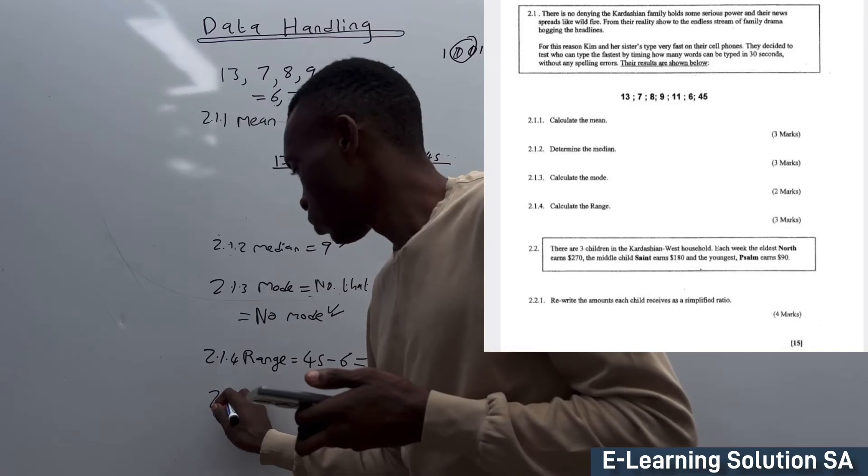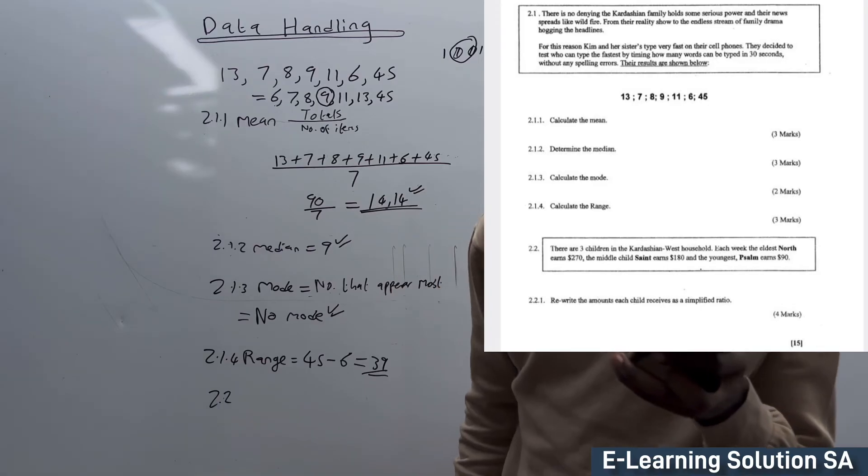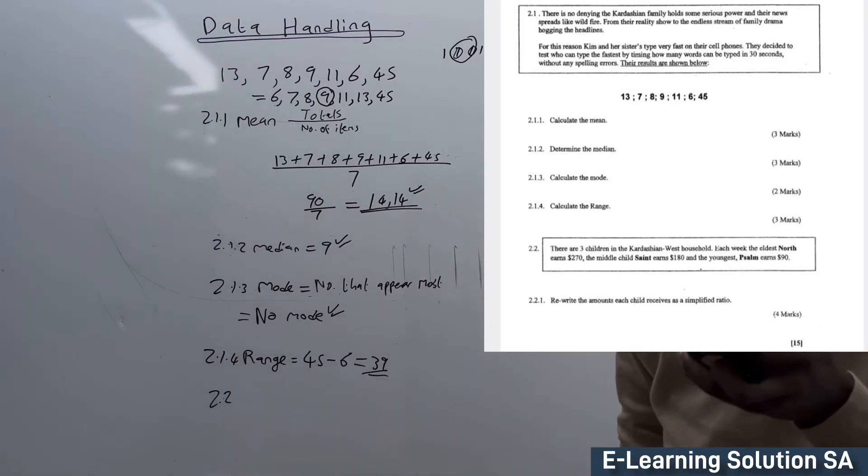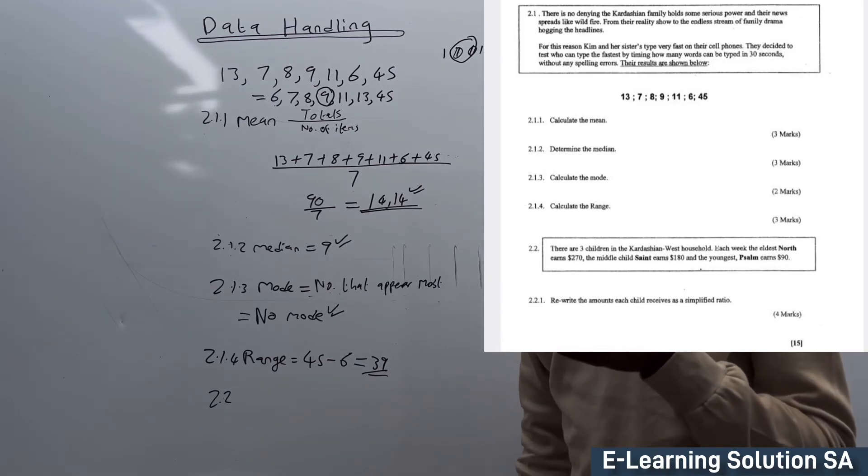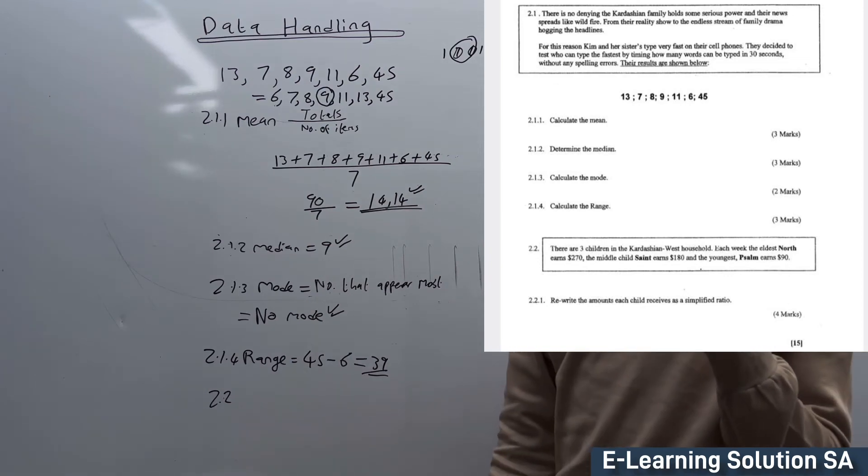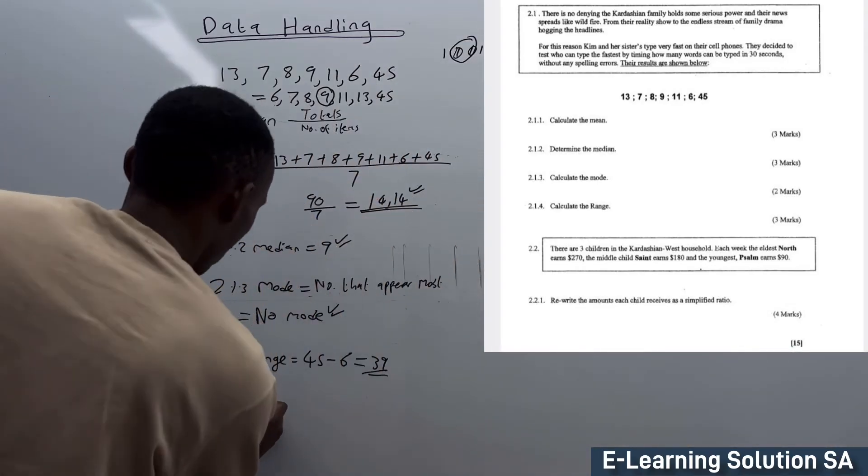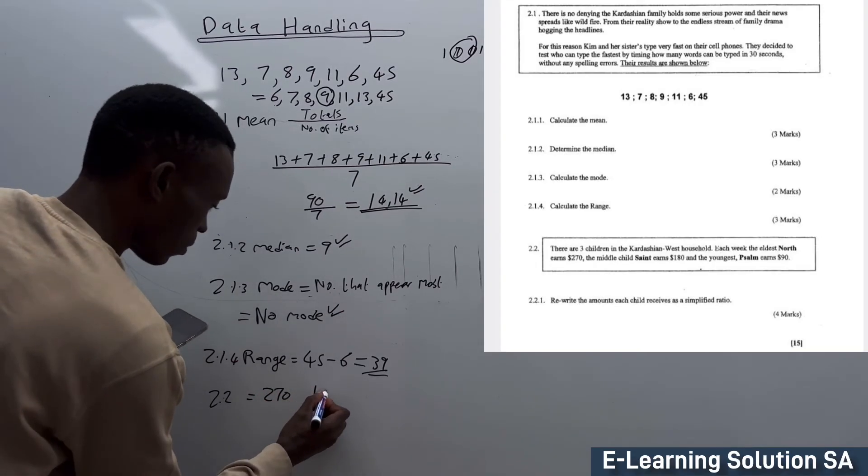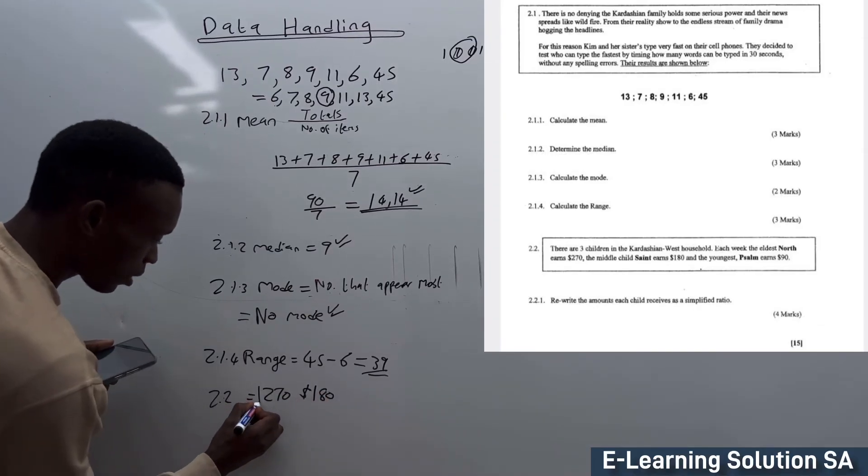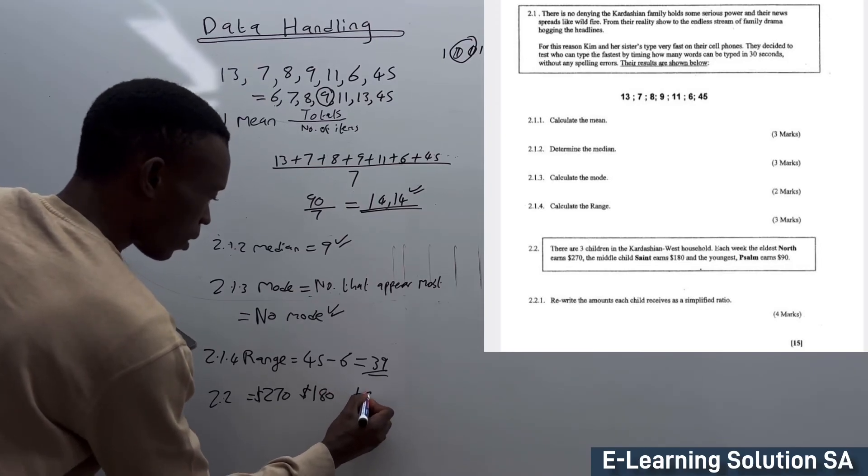Now we go to 2.2. There are three children in Kardashian West household. Each week, the eldest North earns $270, the middle one Saint earns $180, and Psalm earns $90. Let's write them in order: 270, 180, and 90 dollars.